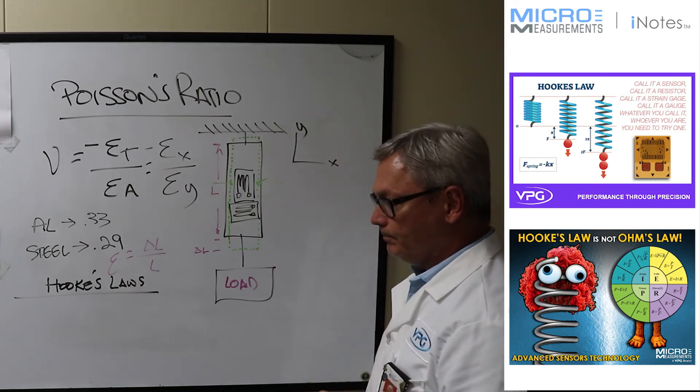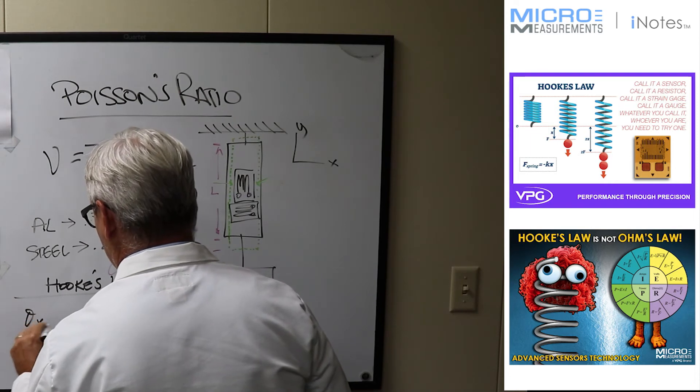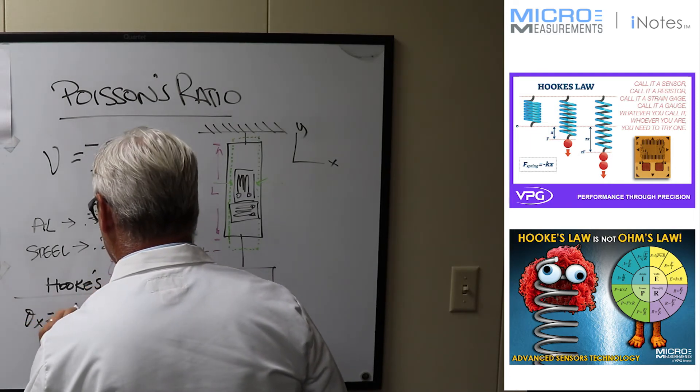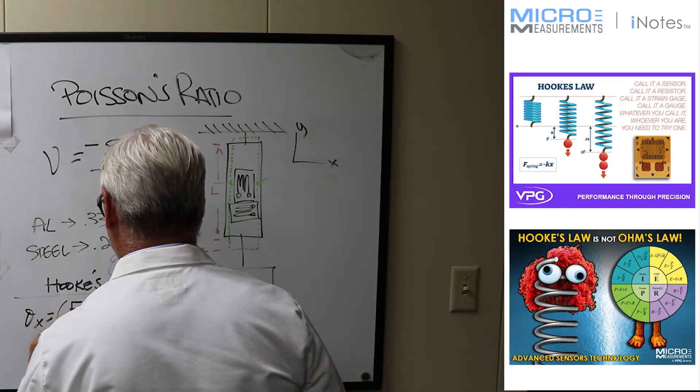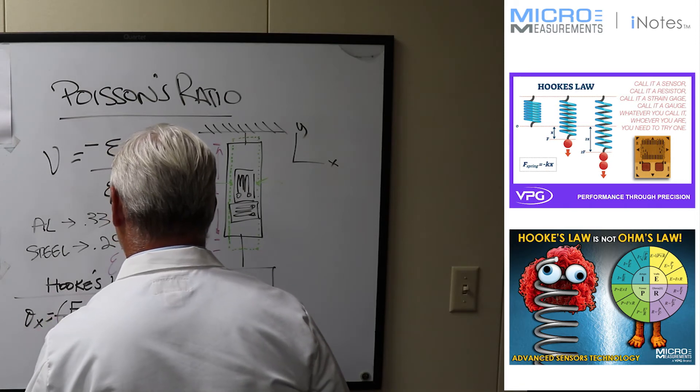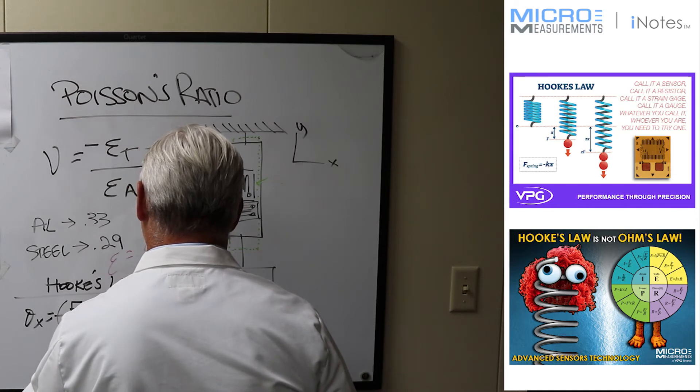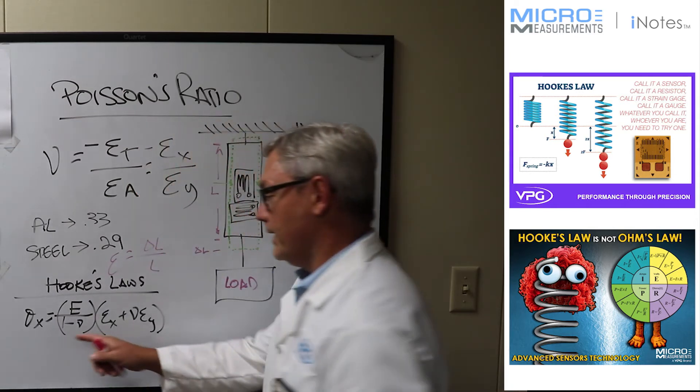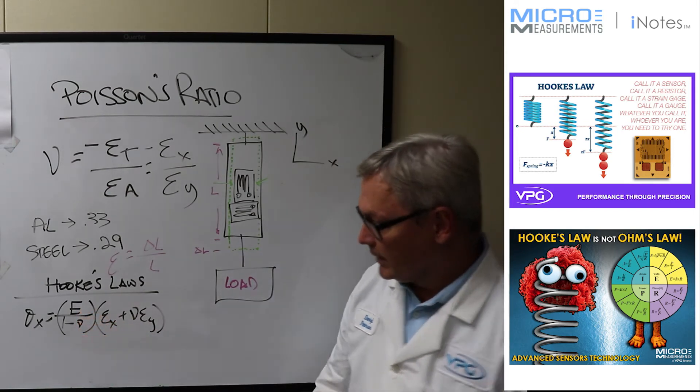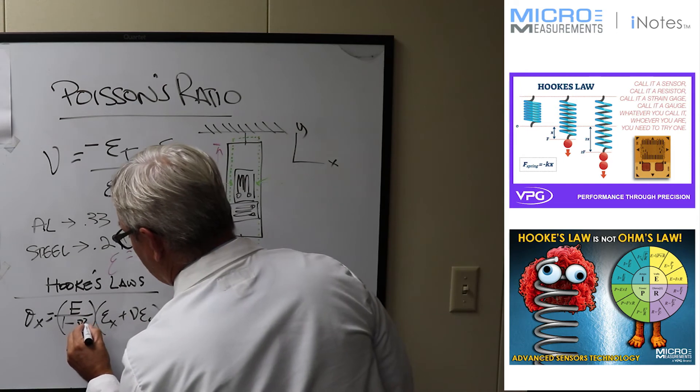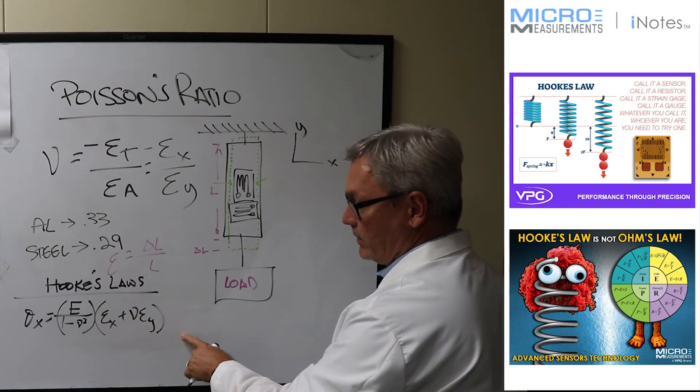And Hooke's Law is for a biaxial stress state. You're going to find that the stress in the x direction is going to be equal to the Young's modulus over one minus the Poisson ratio squared times the strain in the x direction plus Poisson ratio times the strain in the y direction.